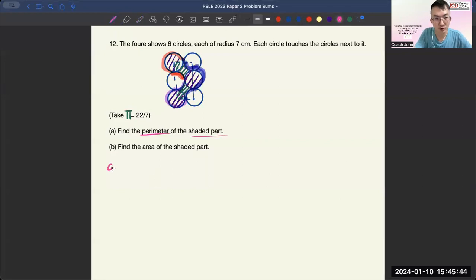So for part A, the circumference of three circles will be 3πd, which equals 3 times π times diameter 14 (2 times 7), and that's 132 cm. The skill that your child must develop is the grouping of the circles together and calculating together.